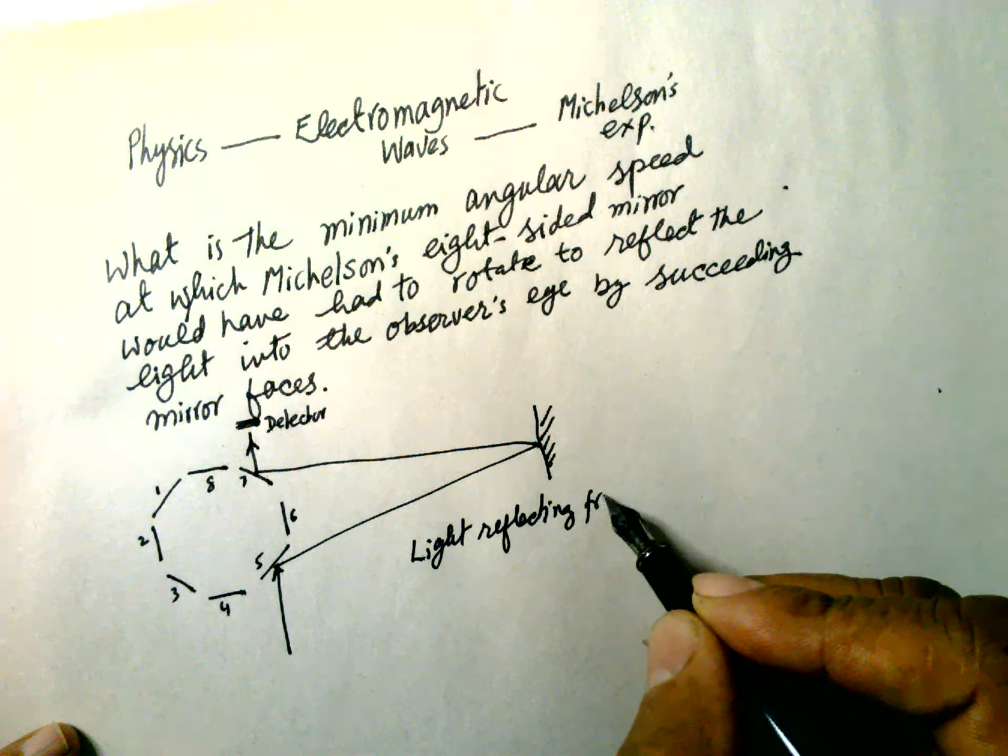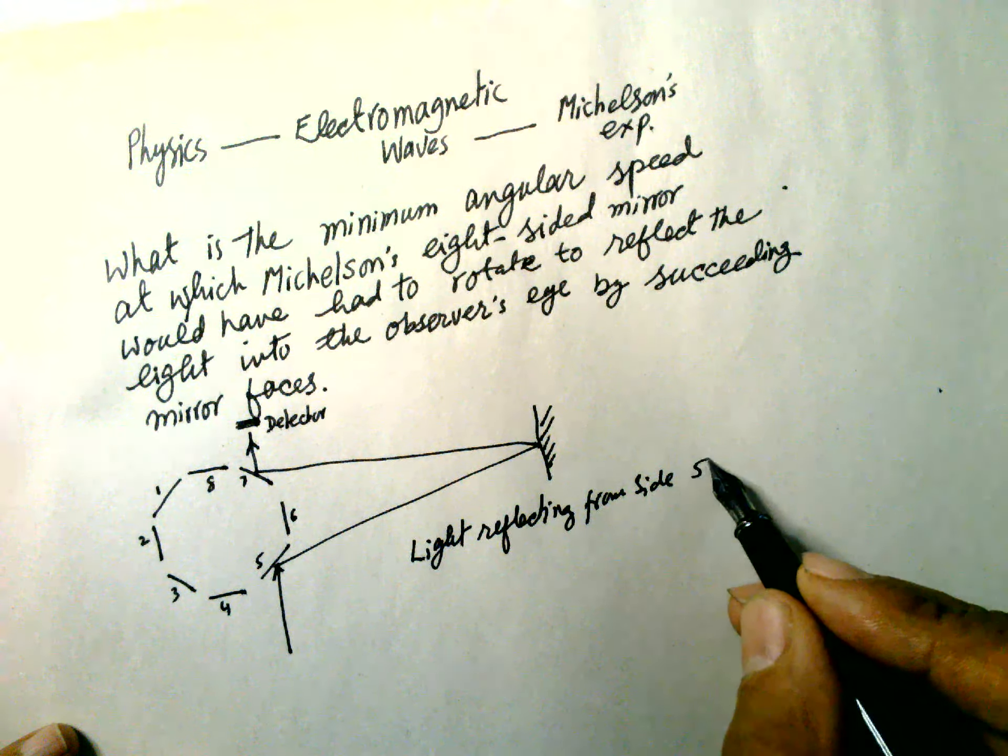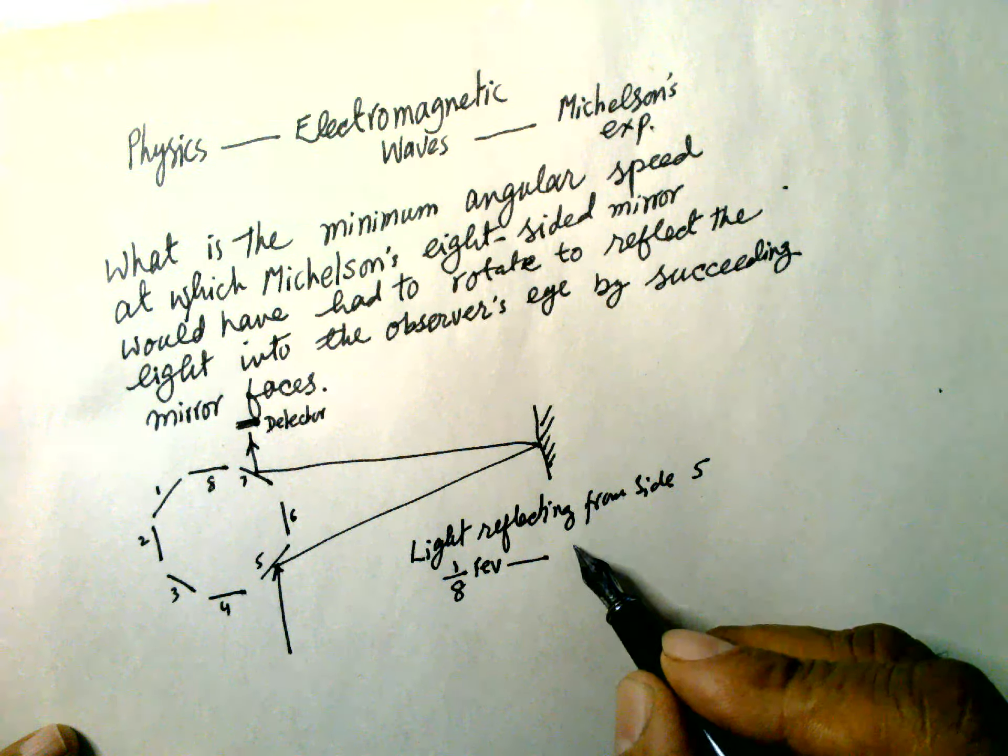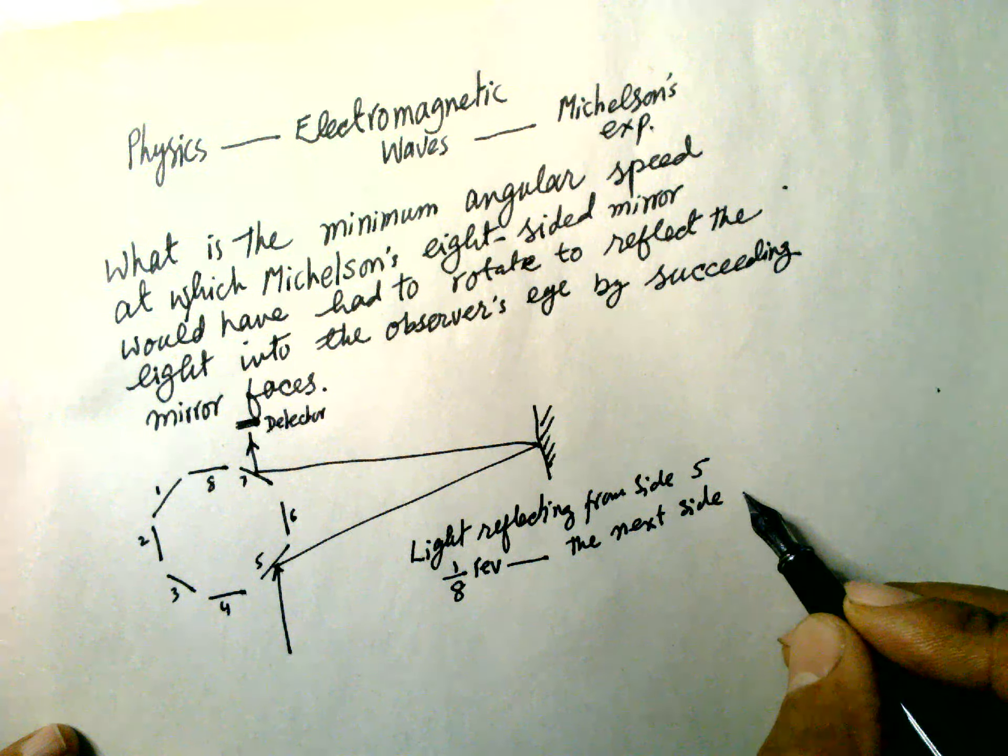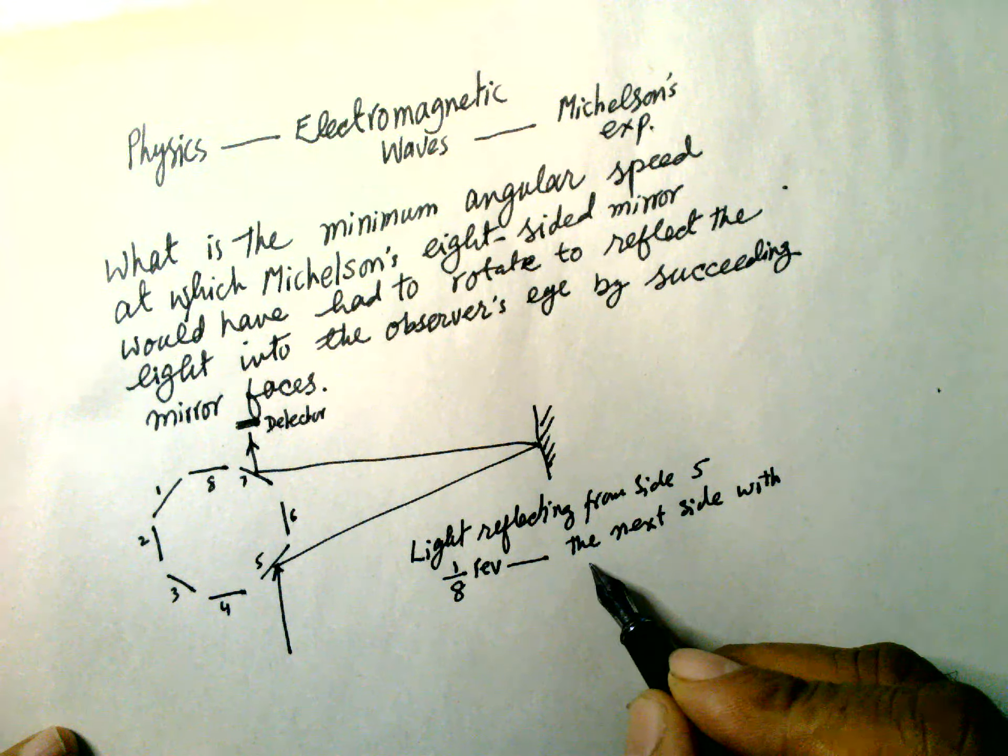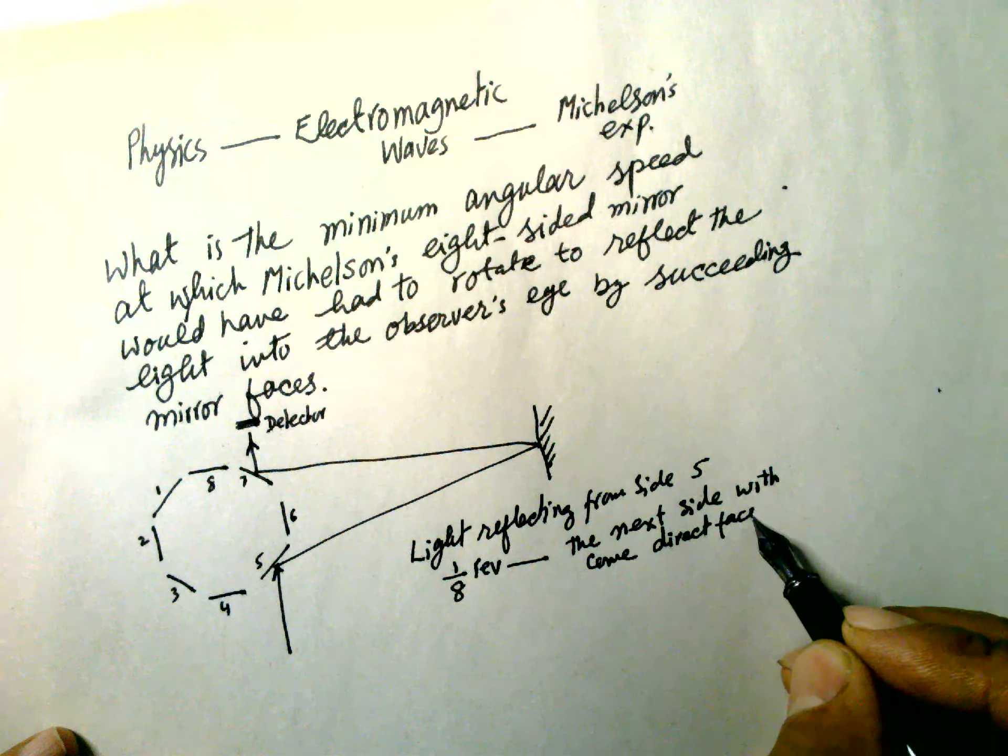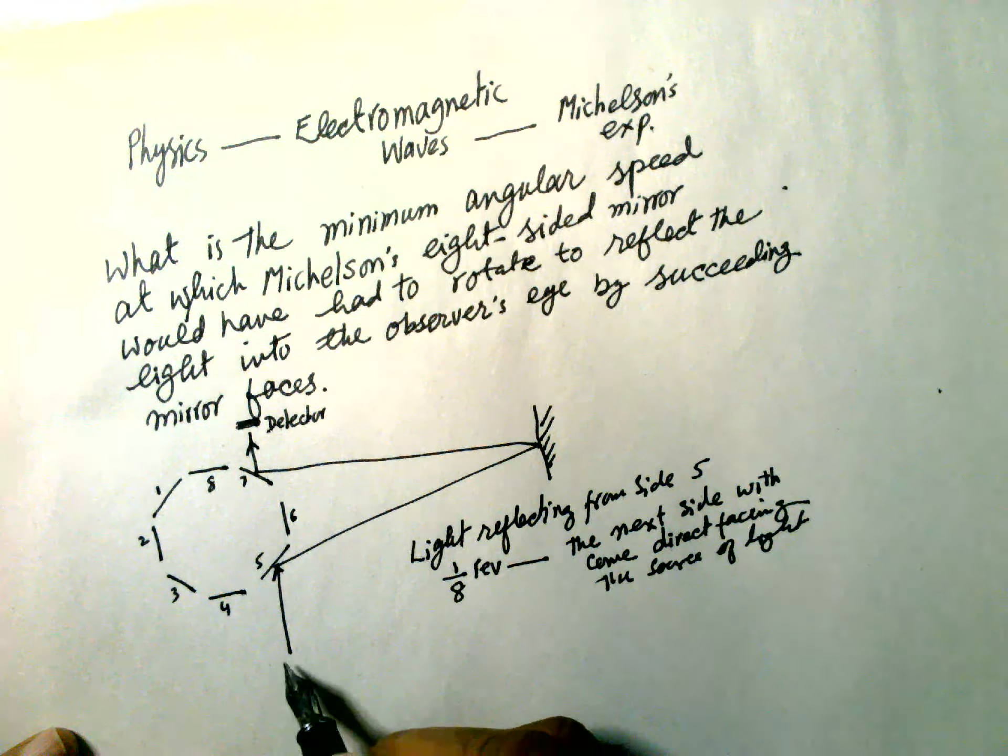So light reflecting from side five. And if it is rotated by one-eighth of the revolution, then five goes to the next, and the next side will come directly facing the source of light. This is the source of light.